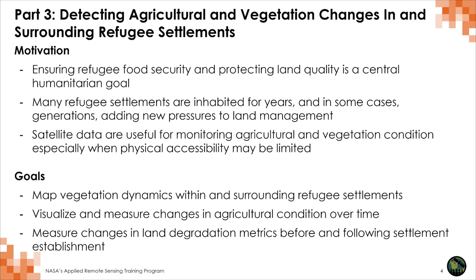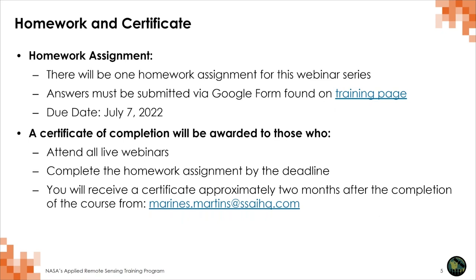Today we'll be mapping vegetation dynamics within and surrounding refugee settlements, visualizing and measuring changes in agricultural condition over time, and measuring changes in land degradation before and following settlement establishment. There is a homework assignment due July 7th, to be submitted via a Google Form on the training page. Completion alongside attendance of all webinars will earn a certificate of completion, sent about two months after the course.